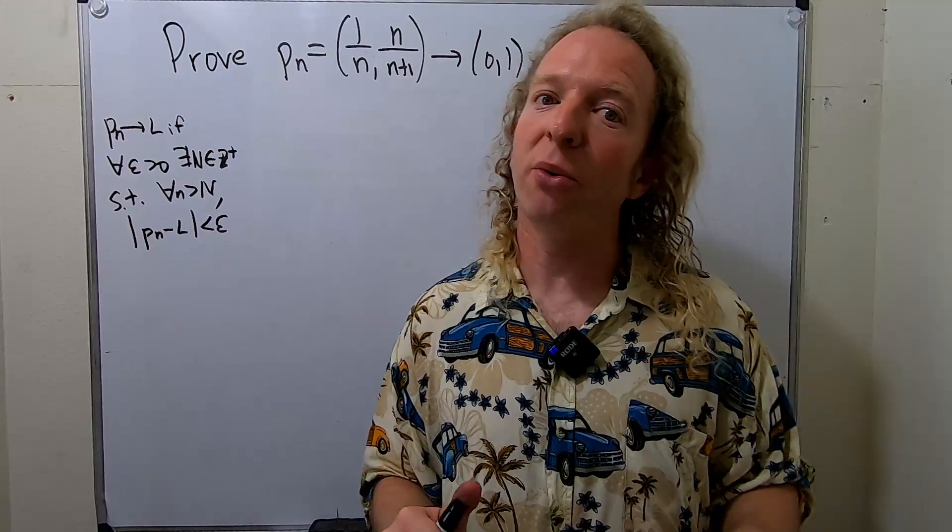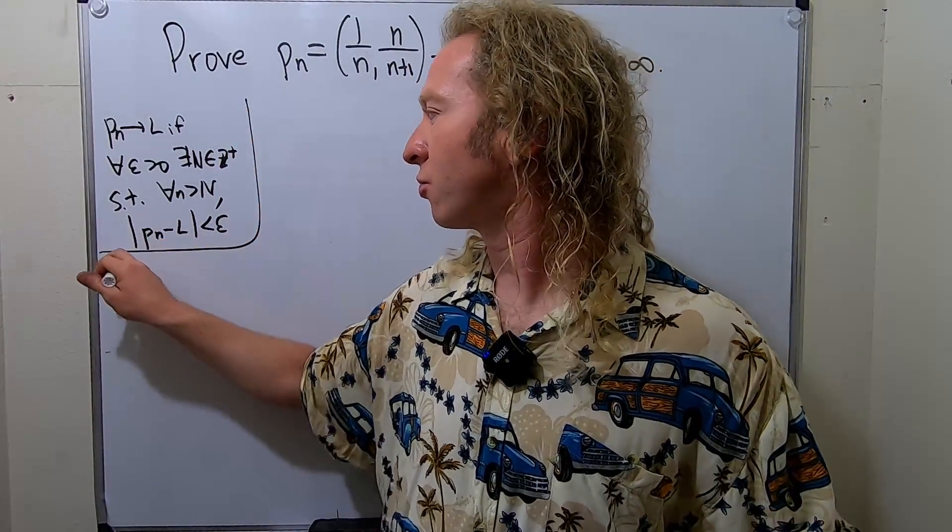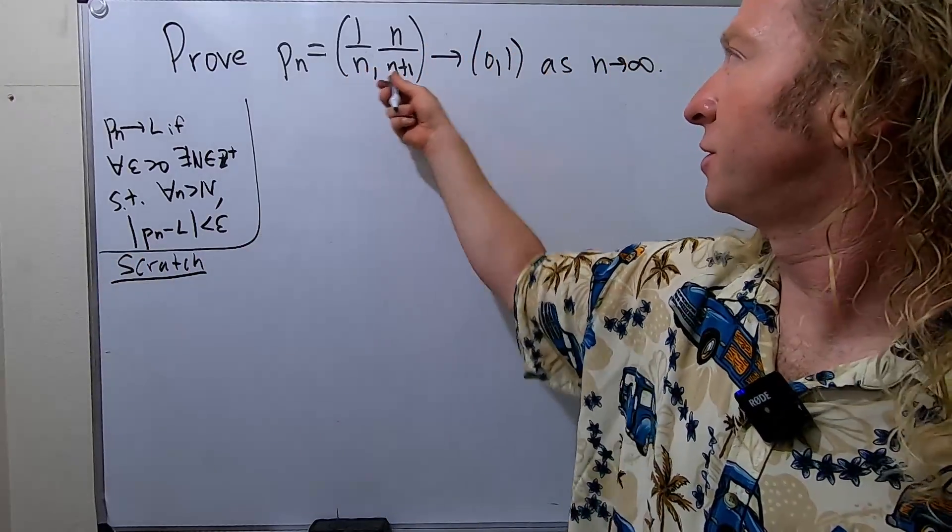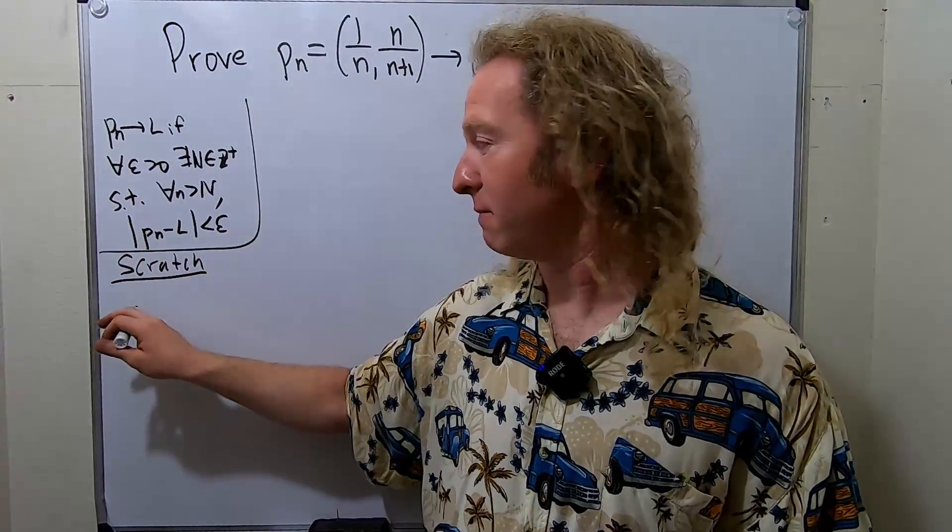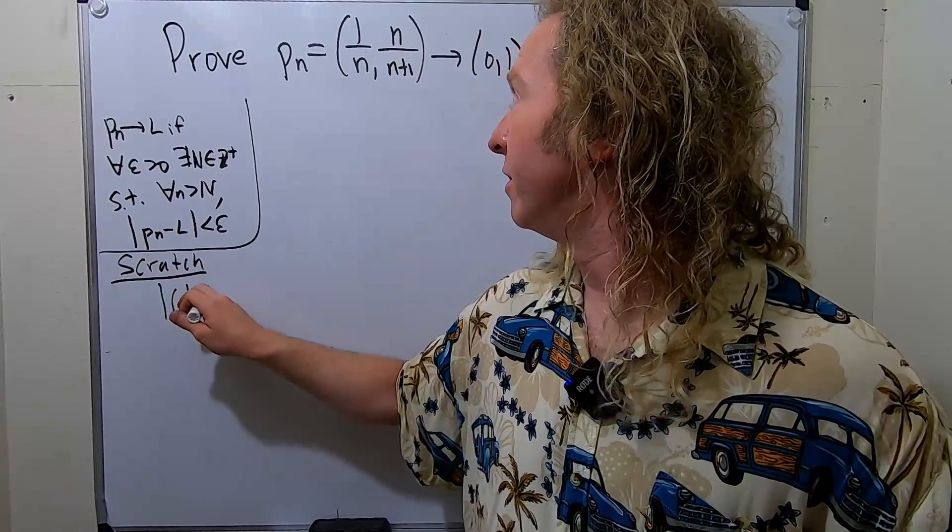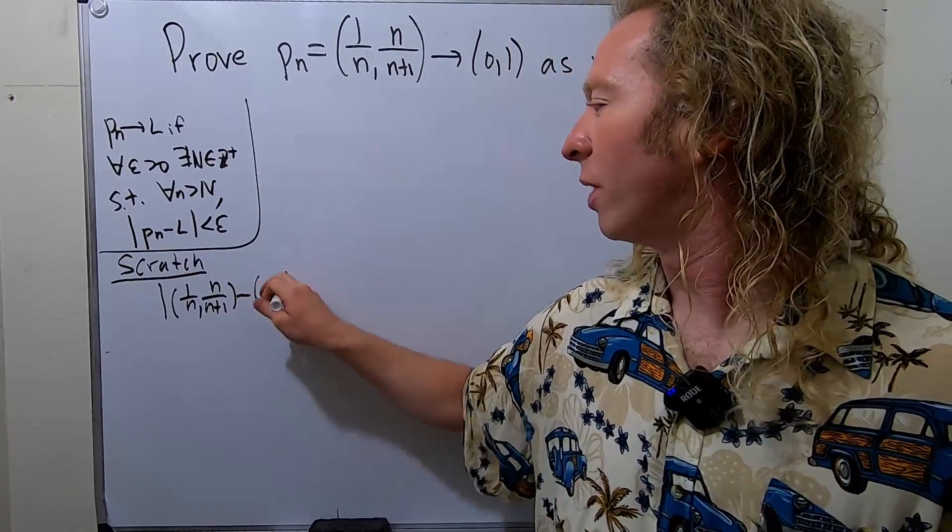So I haven't done this problem, so let's try to figure it out, and then we'll go through the proof. So scratch. To figure it out, we need to look at the distance between this and this. So we're going to look at the magnitude or the distance of this and this, (0,1), just like that.